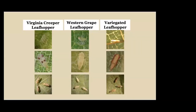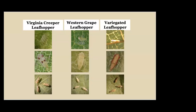Moving on to leafhoppers. We have three main leafhoppers that cause issues in vineyards: Virginia creeper, western grape, and variegated leafhopper. The adults and nymphs of all three species are relatively the same size and shape but differ in markings and coloration. Virginia creeper lays eggs singly or in groups of two to nine laid side by side, while western grape leafhopper eggs are always laid singly in a bean-shaped pattern. Both Virginia creeper and western grape leafhopper eggs create a raised blister appearance on the leaf, but variegated leafhopper eggs are laid deep within the grape tissue and can only be seen when you shine light through the leaf under magnification.